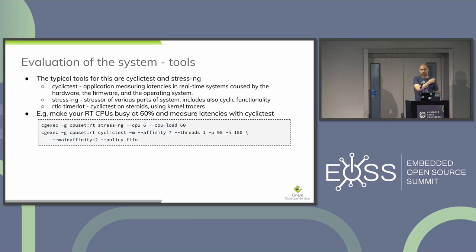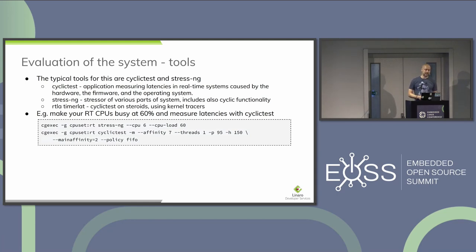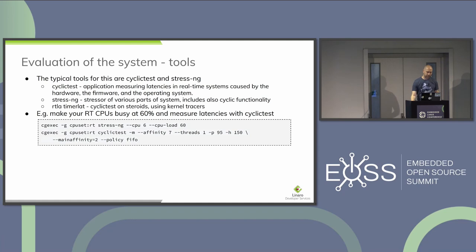We have tools to measure this. The most well-known is cyclictest, which measures full system latencies including hardware and firmware latencies. It's often coupled with stress-ng — a great tool — which I used purely for stressing the system in various ways: stressing CPUs, the scheduler, IO, simulating many workloads. There is also the newer RTLA (RT-Linux Timer Latency) tool set. An example command makes the system 60% busy with stress-ng and then uses cyclictest to measure latencies.